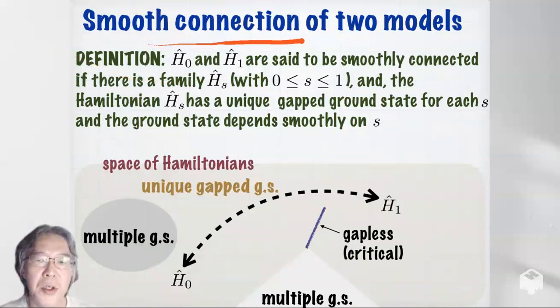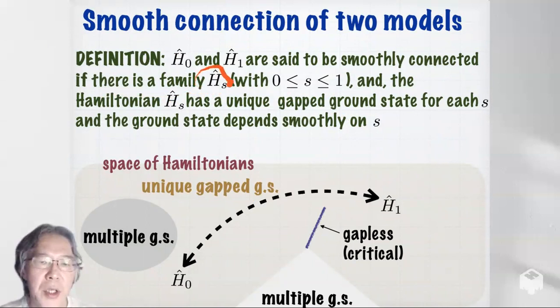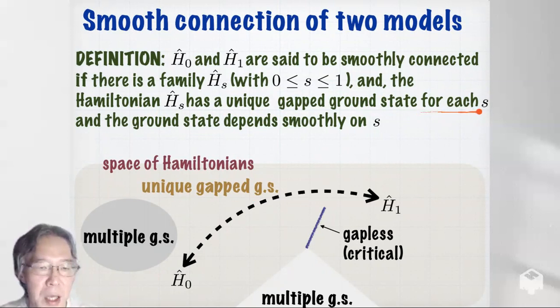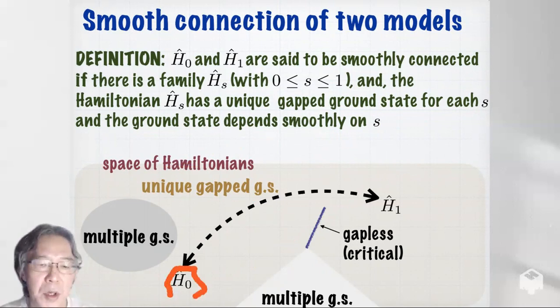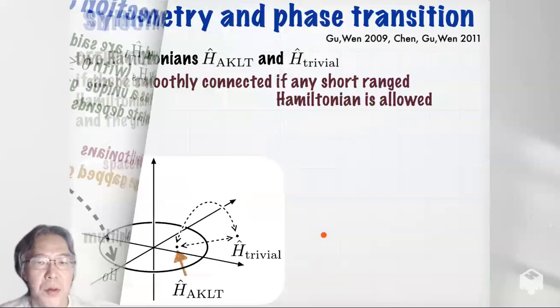In order to discuss this kind of phase transition, I introduce the notion of smooth connection of two models. Two Hamiltonians H_0 and H_1 are said to be smoothly connected if there exists a family H(s), where s runs from 0 to 1, such that H(s) has a unique gapped ground state for each s and the ground state depends smoothly on s. Geometrically, this means you can travel from H_0 to H_1 in the space of Hamiltonians without passing through any region with multiple ground states or gapless spectra.